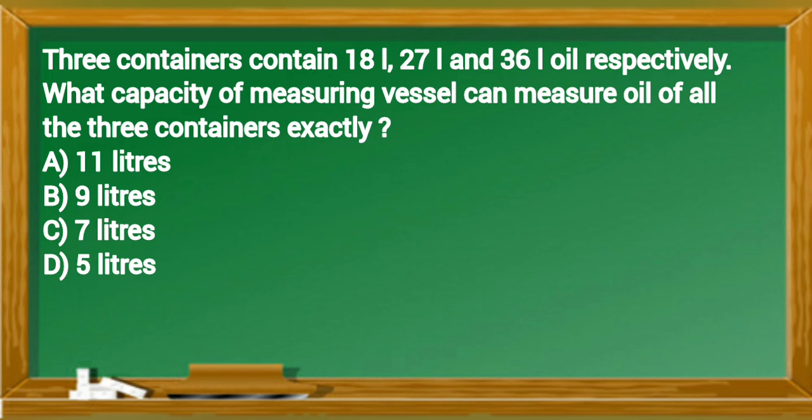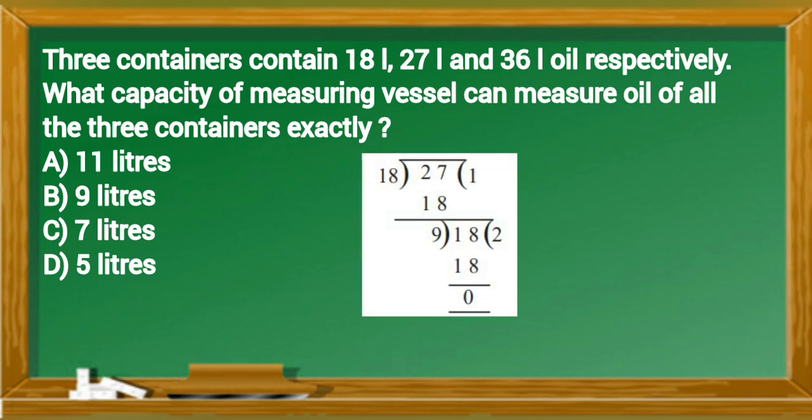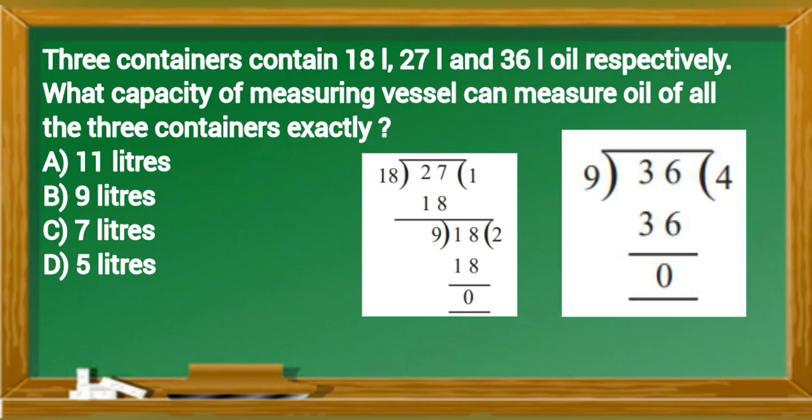Three containers contain 18 liters, 27 liters and 36 liters oil respectively. What capacity of measuring vessel can measure oil of all the 3 containers exactly? We need such a measuring vessel which can measure oil of all 3 containers exactly. For that, we will find the HCF of all 3 containers. A vessel of 9 liters can measure oil of all 3 containers exactly. So, option B is correct option.